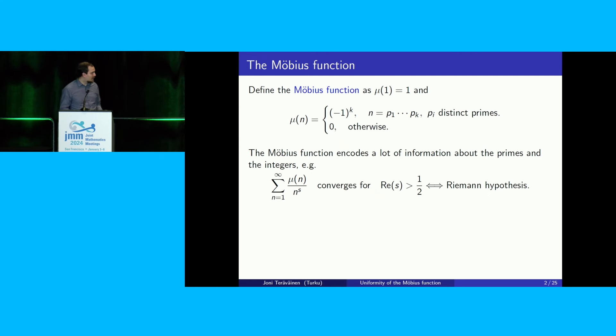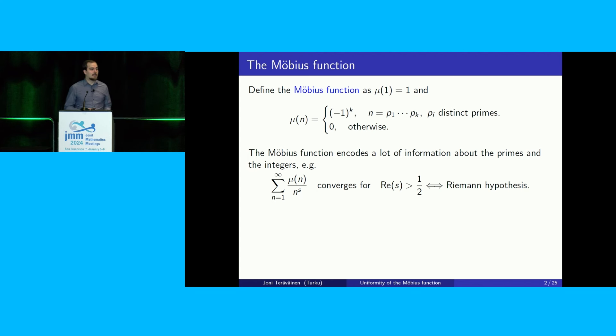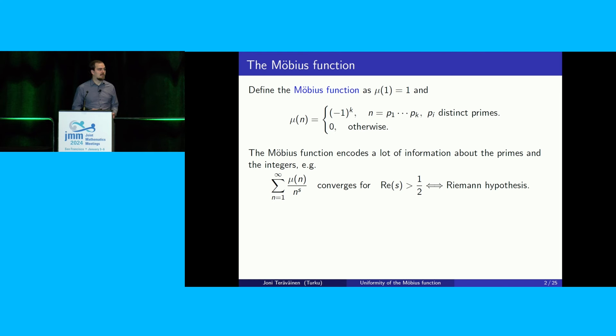The definition of the Möbius function is quite simple, but it turns out many deep properties and open questions about the primes and integers can be encoded into this function. For example, the Riemann hypothesis can be shown to be equivalent to the sum of mu of n over n to the s being convergent for s with real part greater than one half.